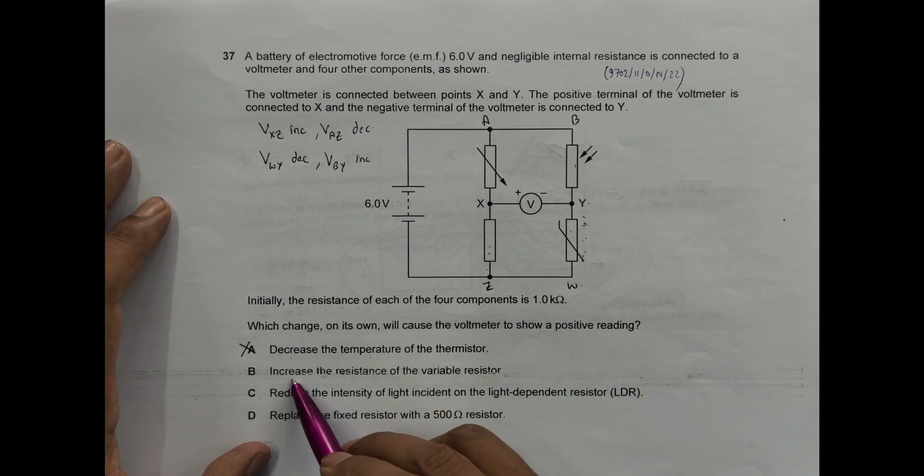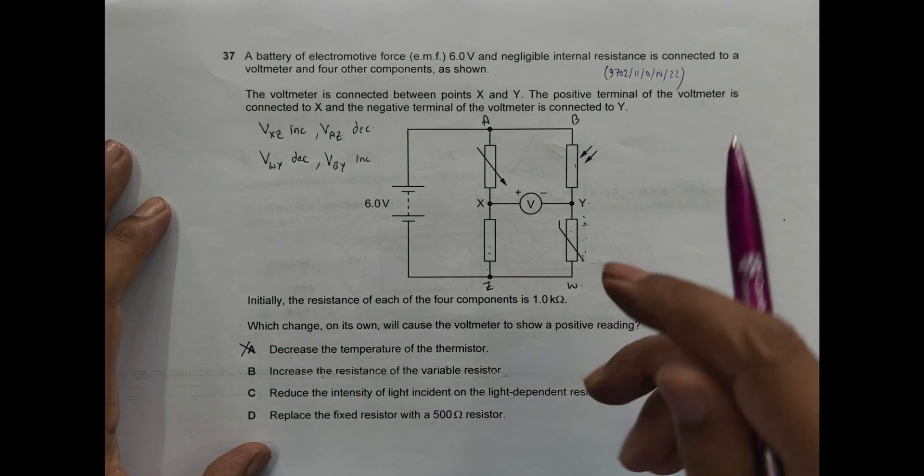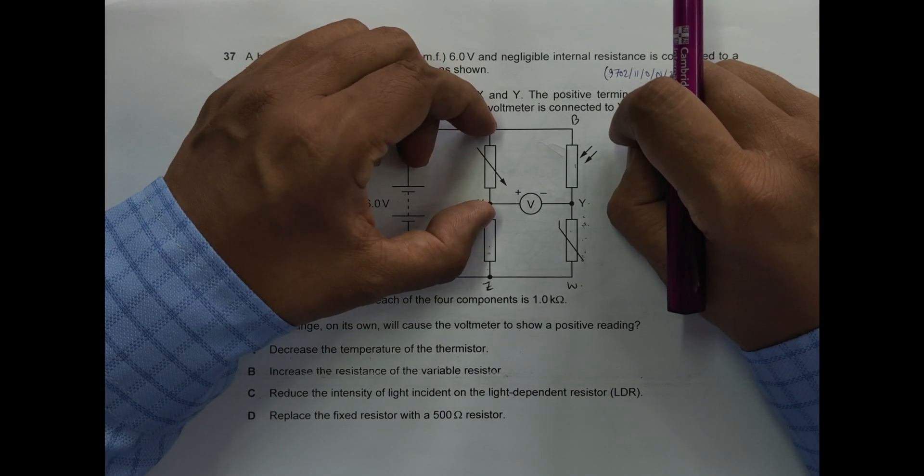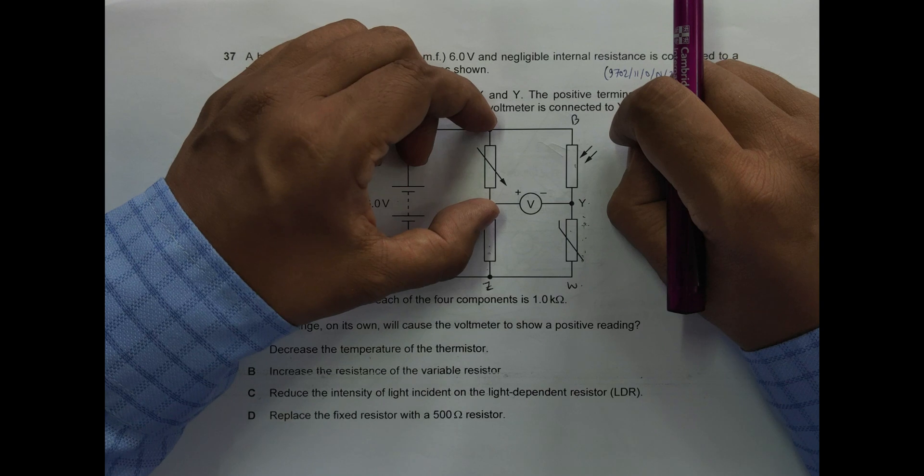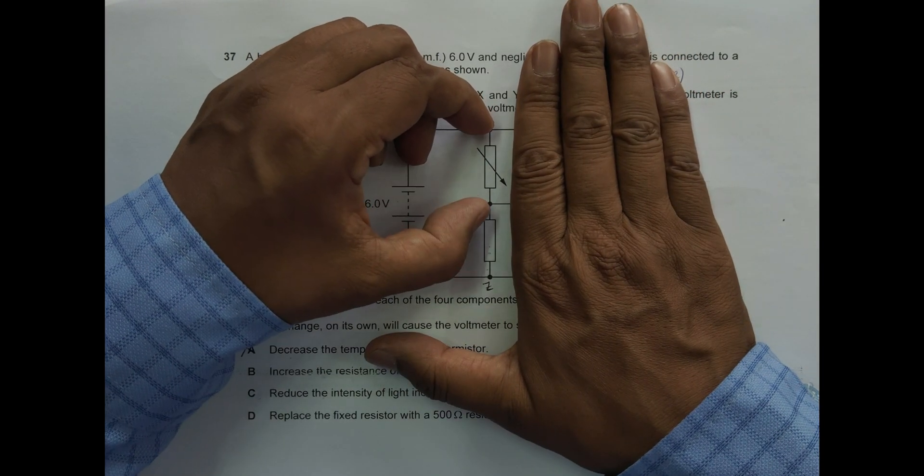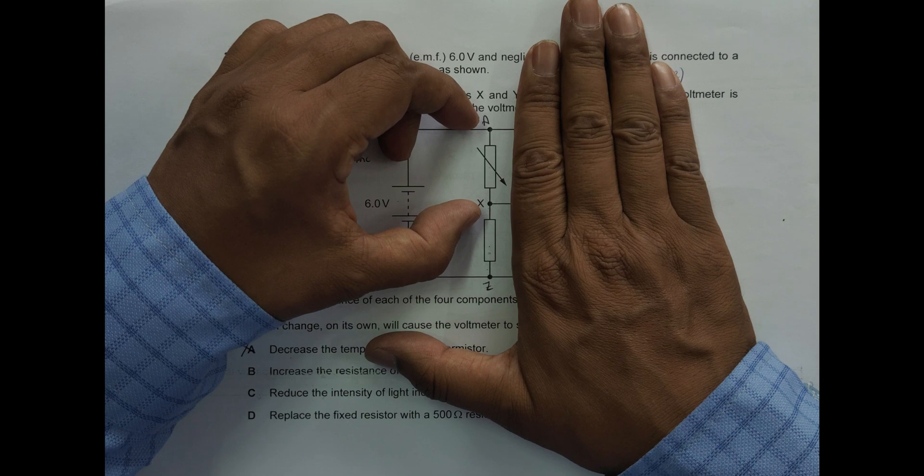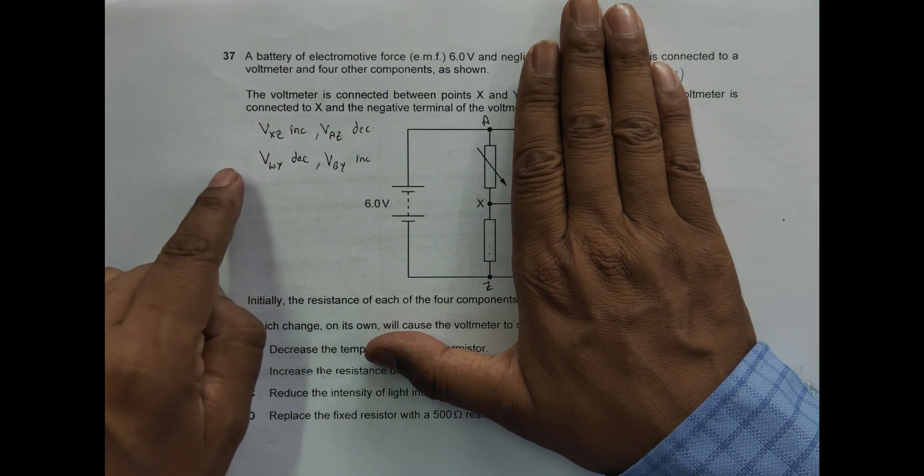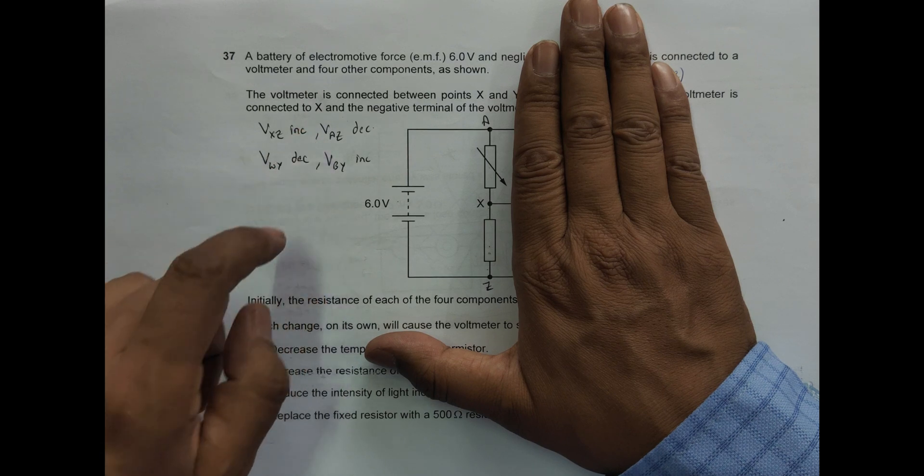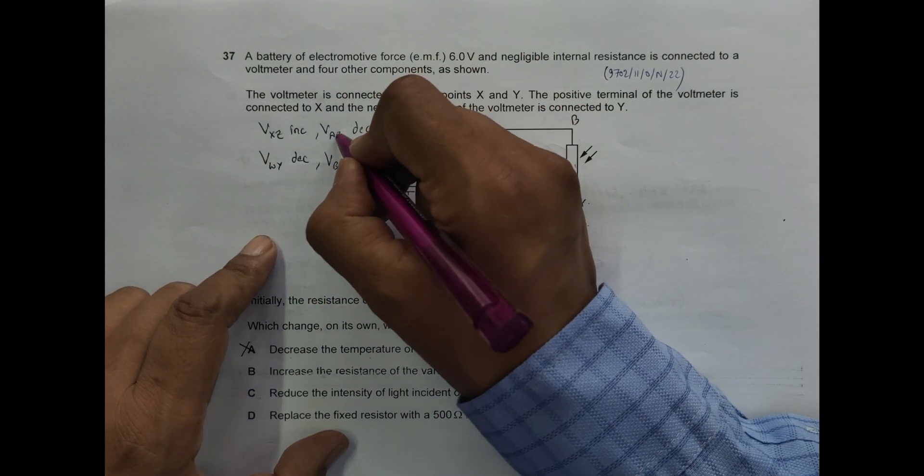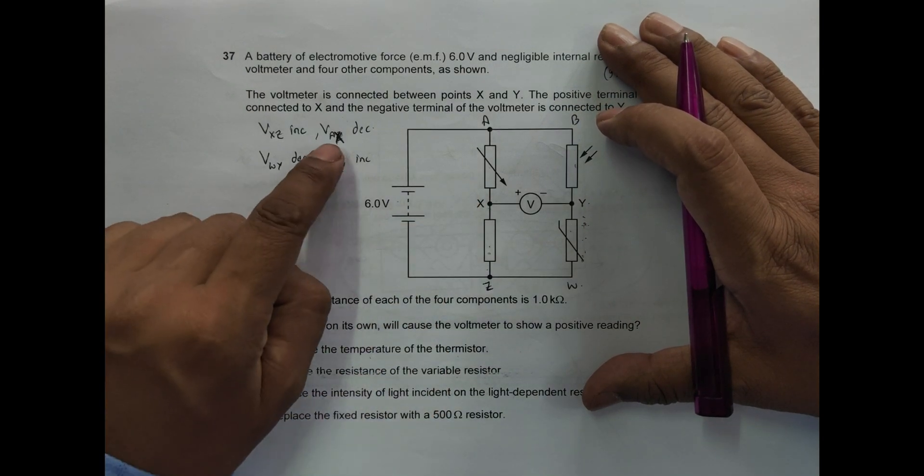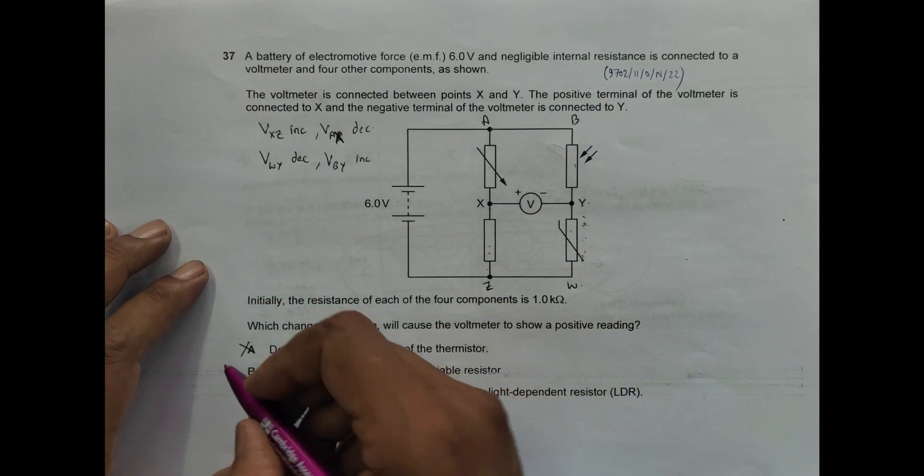Next is increase the resistance of the variable resistor. So if I increase this variable resistance here, if I increase its resistance and apply the voltage divider principle here, its share of voltage will increase. So what we have here is Vax—this is Vax—Vax should decrease, but this increases Vax. Here it says Vx should decrease, so this is also incorrect.